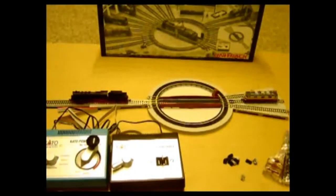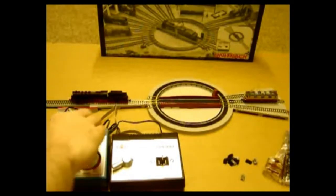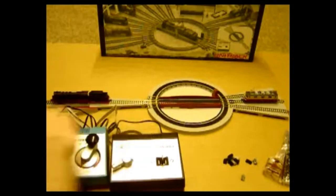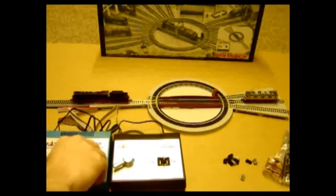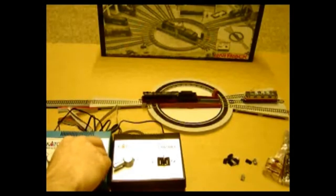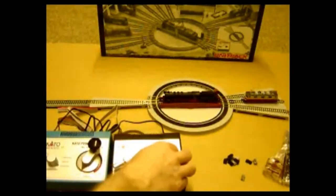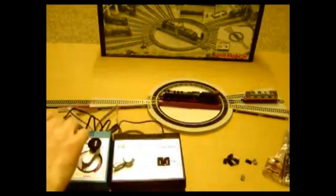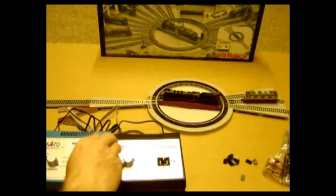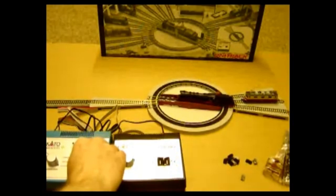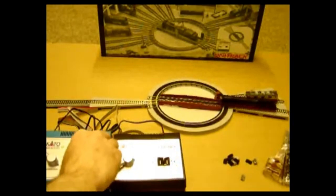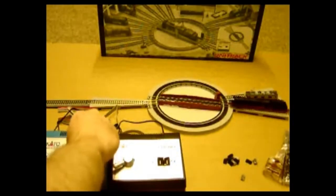I've now put the insulated rail joiners in, and you can wire that track up that is insulated to a switch so that you can switch the power on when you need to. That means that you can then use tracks that are opposed to each other.